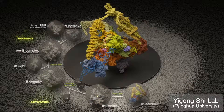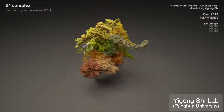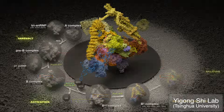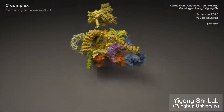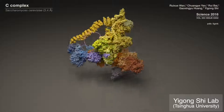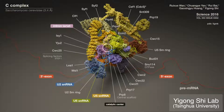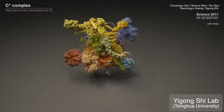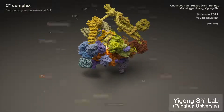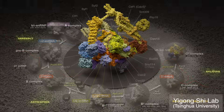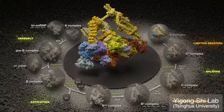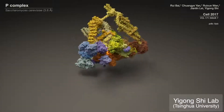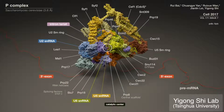The B-star, the catalytically activated complex, is pivotal for understanding the branching reaction. The C-complex, the catalytic step 1 spliceosome, contains the intron-lariat product. The C-star, the step 2 catalytically activated spliceosome, executes the exon ligation reaction. The P post-splicing complex is important for understanding transitions from C-star to the ILS complex.